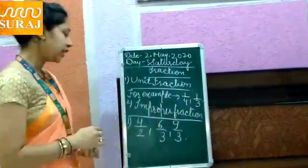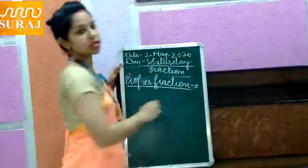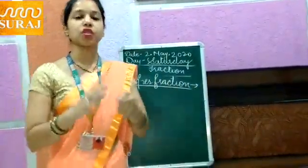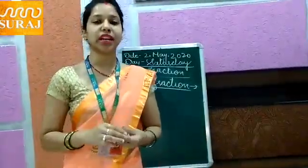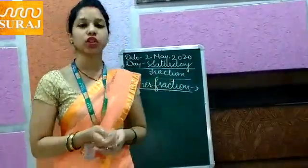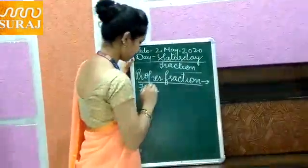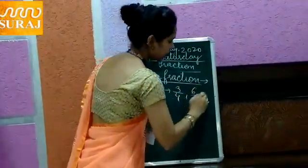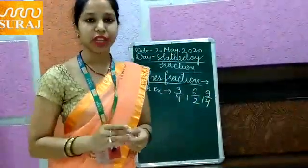Next, we will discuss about proper fraction. This is opposite to improper fraction. In improper fraction, the numerator is greater than denominator, but in proper fraction the numerator is less than denominator. For example, three upon four, six upon two, nine upon four — the numerator is less than denominator.